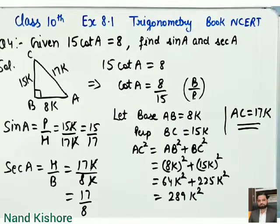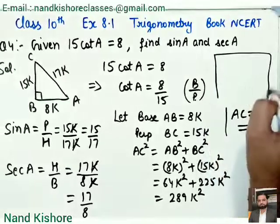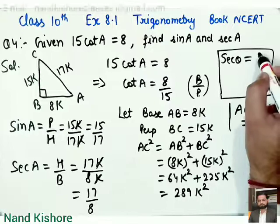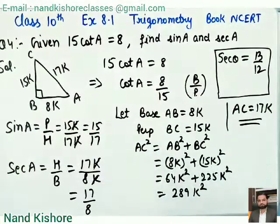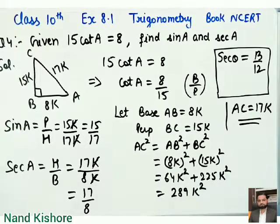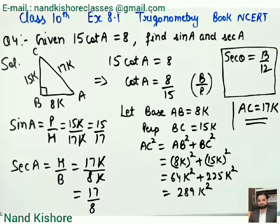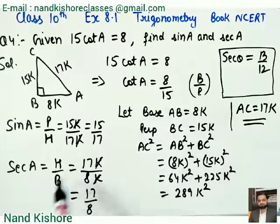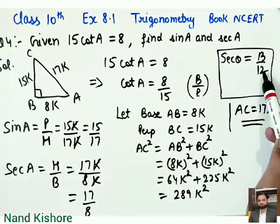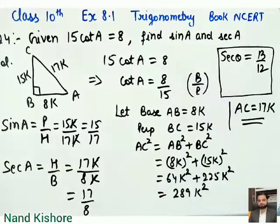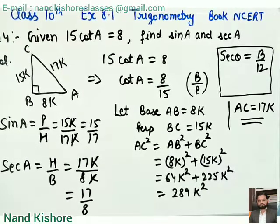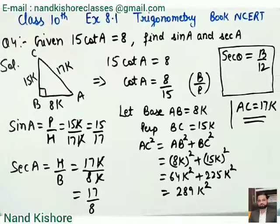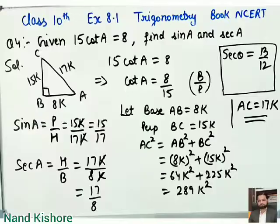Question 5 I'm just giving a hint — please do it at home, because maths is all about practice. The question is: secant θ = 13/12. Calculate all other trigonometric ratios. Since secant = hypotenuse upon base, consider hypotenuse = 13k and base = 12k, then find perpendicular and use the same method to find sine, cos, tan, cosecant, and cotangent. I hope you liked the video — please subscribe, like, and click the bell button so you get notified when I upload the next video. Thank you!